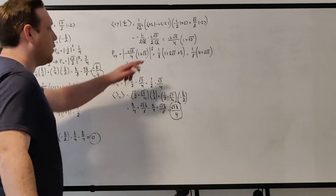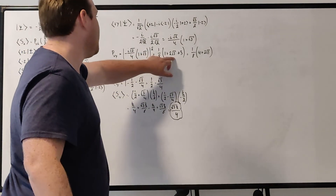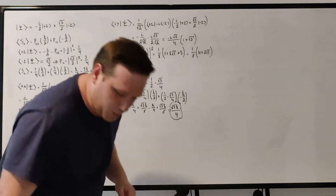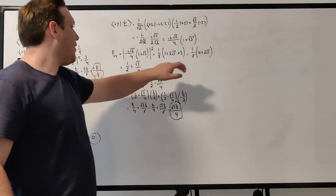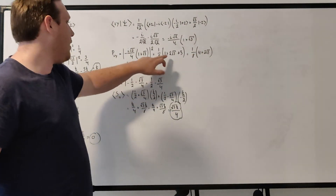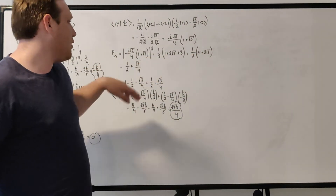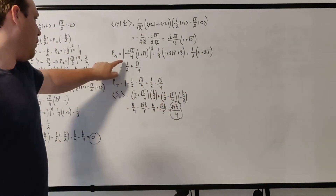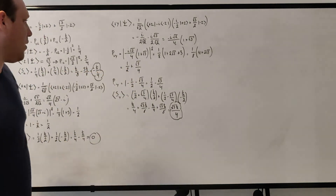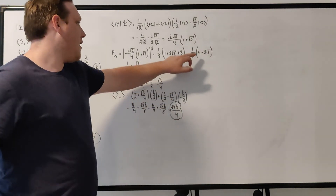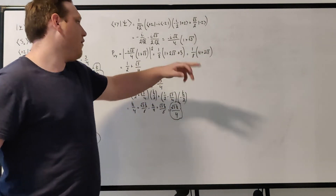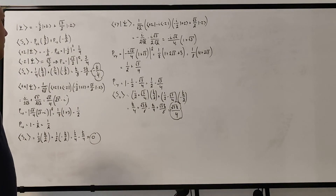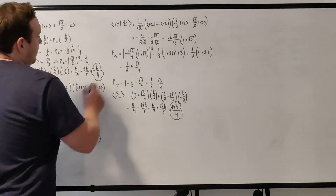Ultimately the prefactor term becomes 1/8. Then (1 + root 3) squared gives 1 + 2 root 3 + 3. That becomes 1/8 times (4 + 2 root 3), because 1 + 3 = 4. Multiplying through by 1/8: 4/8 = 1/2 and 2/8 = 1/4, giving us 1/2 + root 3 over 4. This is our probability for plus y.